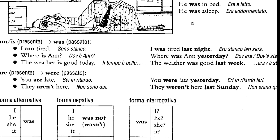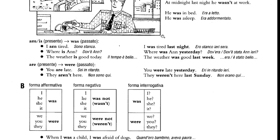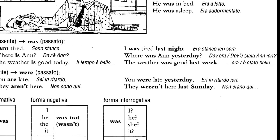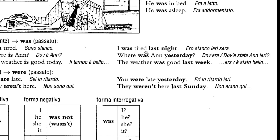The first thing you have to know about the past simple is that it refers to something that has nothing to do with the present — something which is over. For example, 'am' or 'is' at the present becomes 'was' in the past. So 'I am tired' — 'sono stanco' — but 'I was tired last night' — 'ero stanco, ieri sera'. So we're talking about last night and not now.